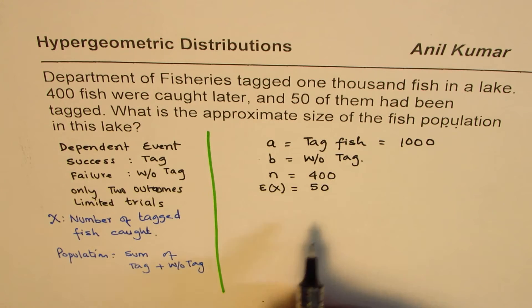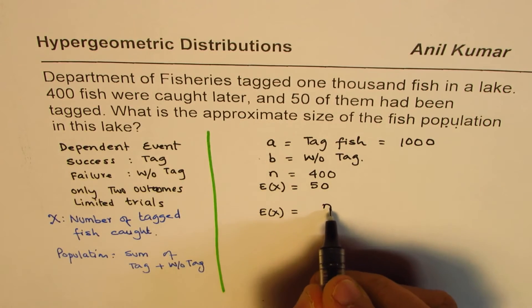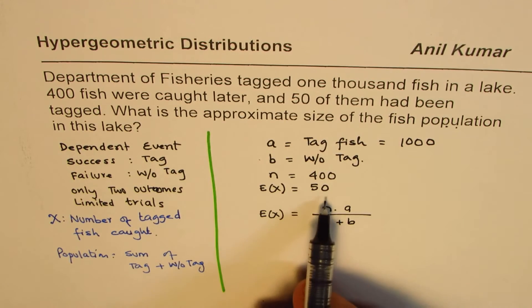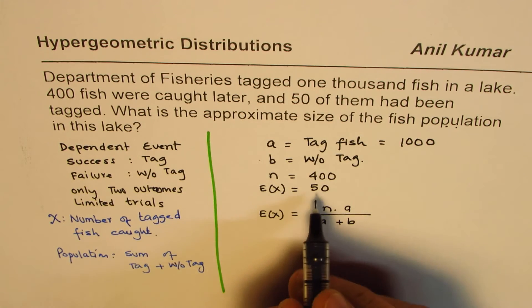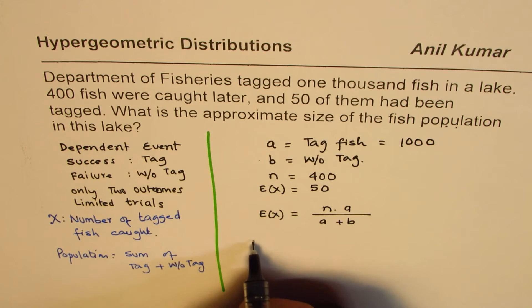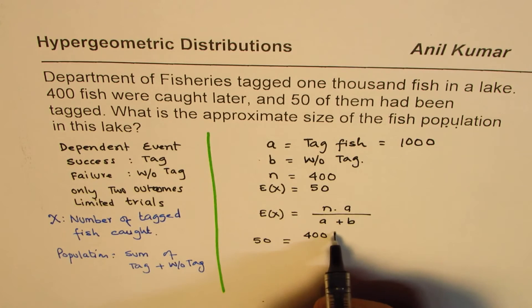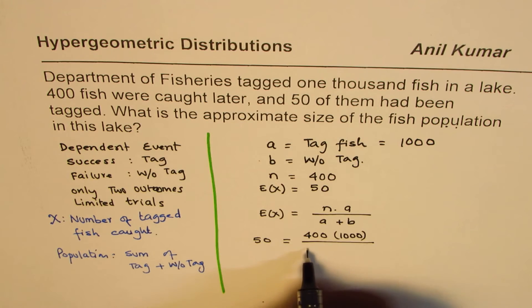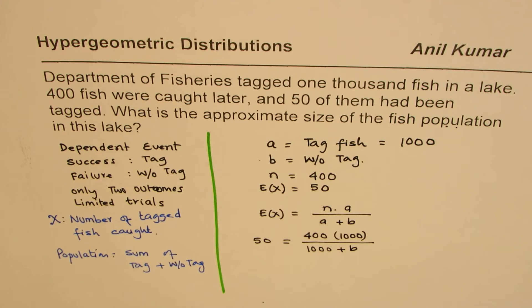Now in hypergeometric distribution, the formula for expected value is N times A over total population, which is A plus B. Now in this, we have all these values given to us. We can substitute and find the answer. So we have 50 as the expected value: 50 equals N, which is 400, times A, which is 1,000, divided by A plus B, which is 1,000 plus B.